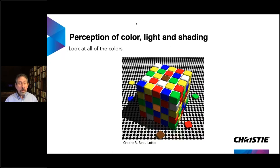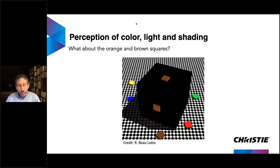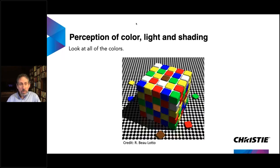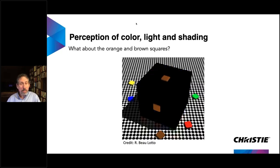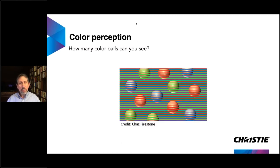A very similar thing occurs with color. Looking at this cube, you see lots of different colors on the three visible surfaces — a brown square on the top center and an orange square on the front center. But when you actually examine them, they're exactly the same color. I'll go back and forth so you can see I'm not changing the colors — your brain interprets it as orange or brown depending on the surrounding context.